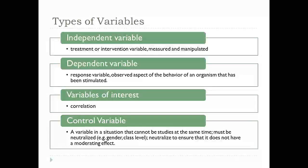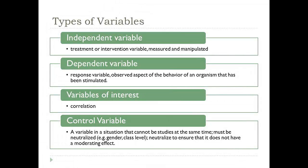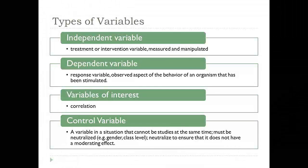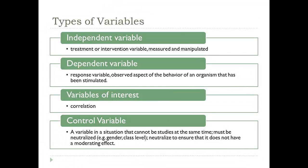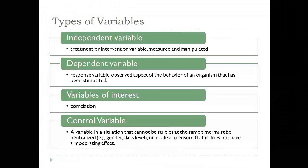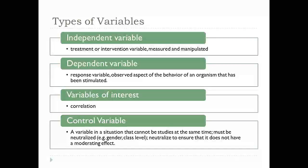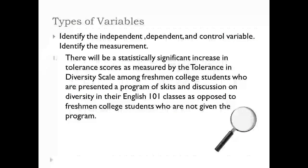So these are the different types of variables you can have in your studies. Let's look at a few examples and make sure that we clearly understand these terms and are able to identify independent, dependent, predictor, criterion, variables of interest, and also control variables. I want you to identify the variables, label those variables as an independent, dependent, or control variable, and then talk about how that variable is being operationally defined.